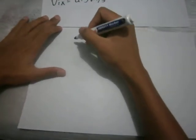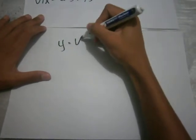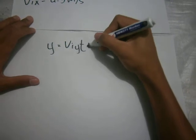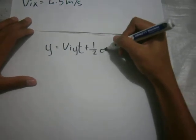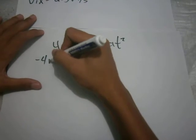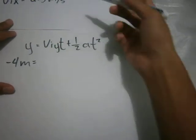The formula to find t based on our given is: y equals initial velocity y times time plus one-half a t squared. So substitute: y equals negative 4 meters, Viy equals 0 meters per second.